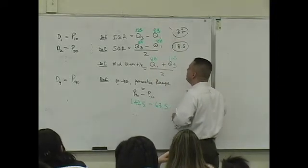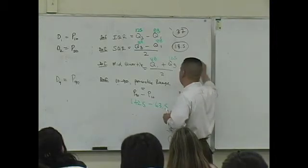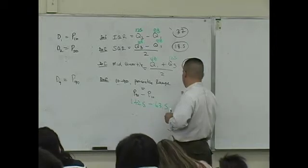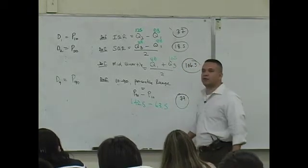And what happens when you add them and divide by 2? 106 point. Okay, and then this 10 to 90 range? Okay, so next time we'll use these things to look at some distributions, okay?